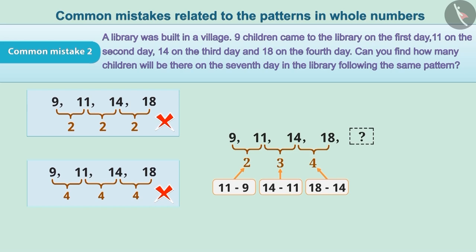Therefore, in this pattern, 2 is added to 9 to get the next number, 11. Then, 3 is added to 11 to get 14, and 4 is added to 14 to get 18. By following this pattern,